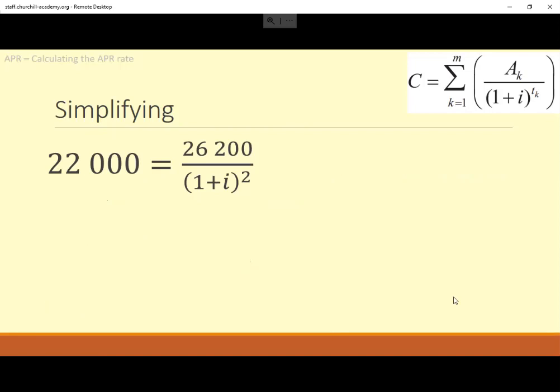First up, we do not want that I, the thing we're looking for, in the denominator. That's going to be really tricky. So we'll multiply through by the denominator. Multiply the left-hand side by (1+i)². I've also multiplied the right-hand side by (1+i)². But 26,200 divided by something and then times by that something, they're going to cancel out. So it just becomes 26,200.